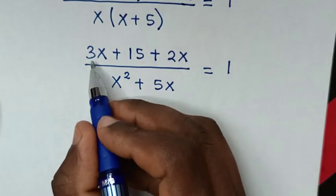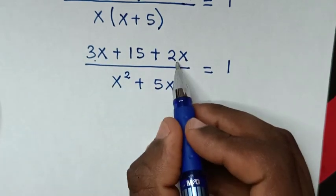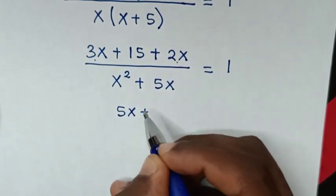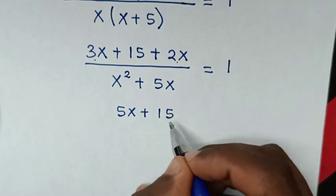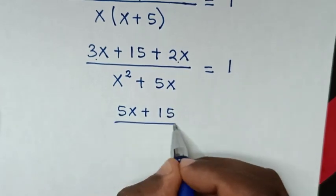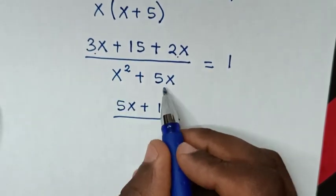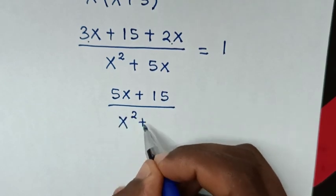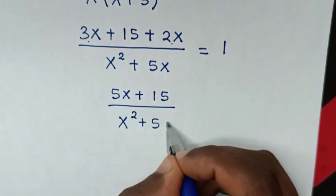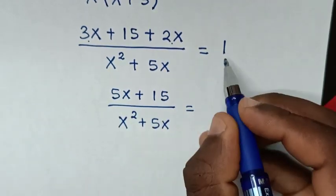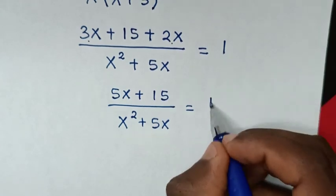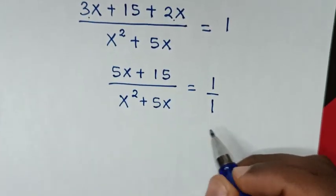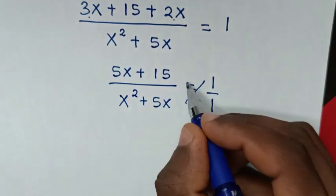Then our equation will be 3x plus 2x is 5x, then plus 15, over x squared plus 5x, is equal to 1. So this 1 is the same as 1 over 1, then we'll cross multiply.